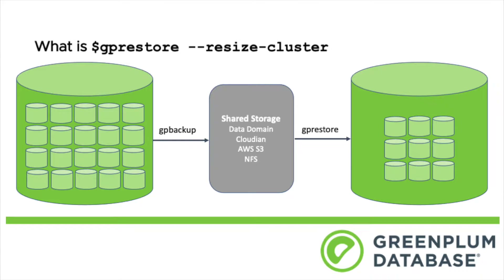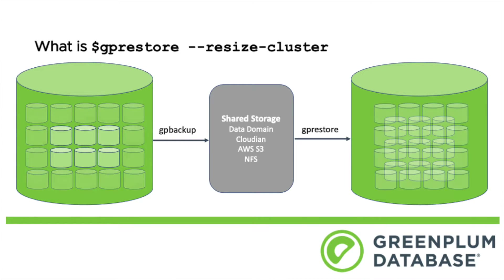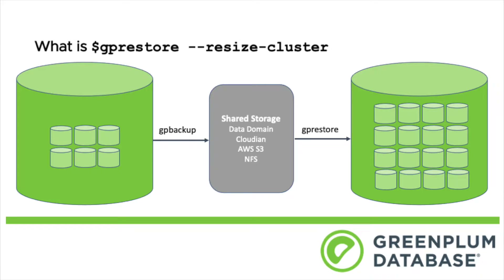The cool thing is we could also do the opposite. We could take a GP Backup of a cluster with a smaller number of segments to that same shared storage and now restore to a Greenplum cluster with a larger number of segments. This has been a customer request for a long time, and we're super excited to be able to deliver it in our version 1.26 release.